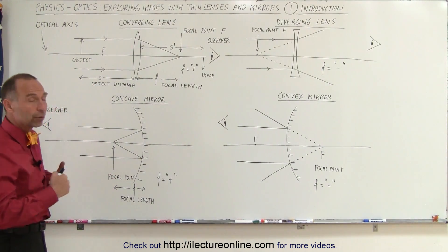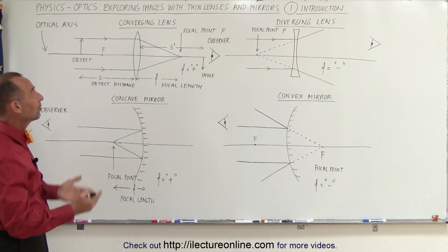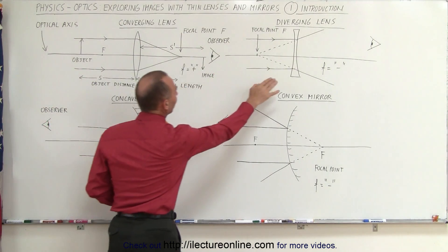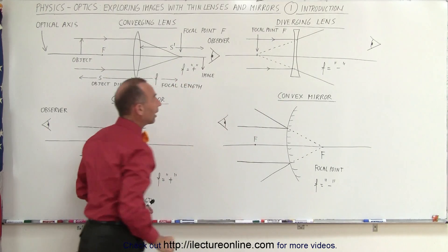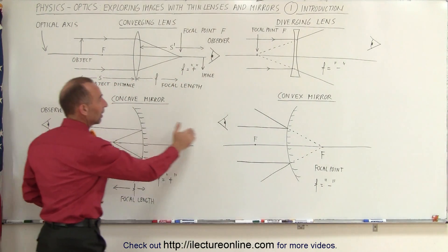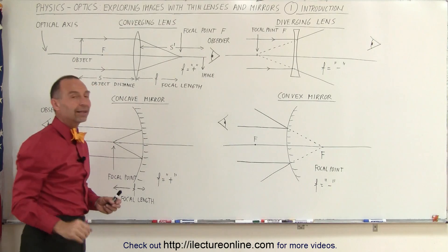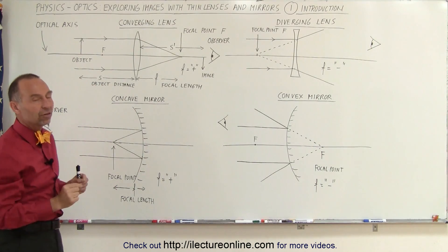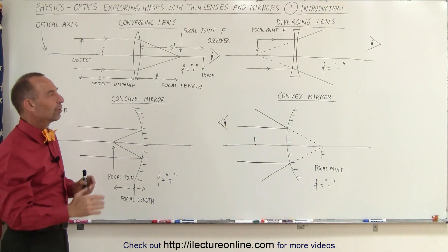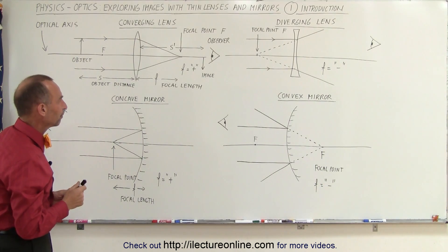We're going to be talking about two types of lenses — converging lenses and diverging lenses — and two types of mirrors — concave mirrors and convex mirrors. The lenses we'll discuss are what we call thin lenses. Later on we'll do some series on thick lenses, and those are very different.